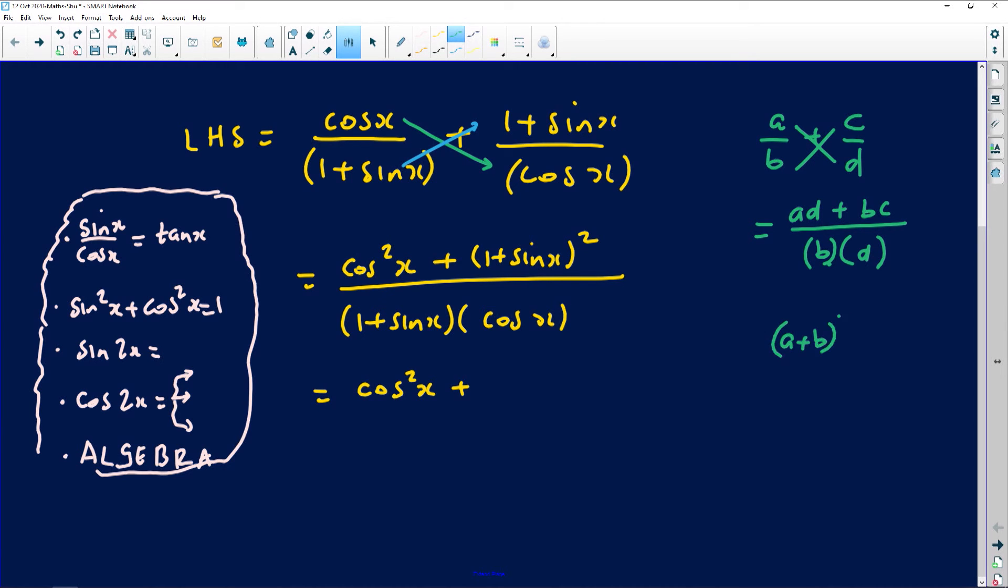Now we need to square that binomial. I end up with cos squared x, plus when you're squaring a binomial grade 12 you guys should know that a plus b squared becomes: square the first guy you get a squared, multiply them a times b is ab, then double them - double the product of the two - and then square the last guy you're going to get b squared. So that's the idea I'm going to engage. Your algebra plays a big role in this. So 1 squared is 1, 1 times sine is sine, double that you get 2 sine x, and then you square the last one which is sine - that's going to give you sine squared x, everything still divided by 1 plus sine of x multiplied by the cosine of x.